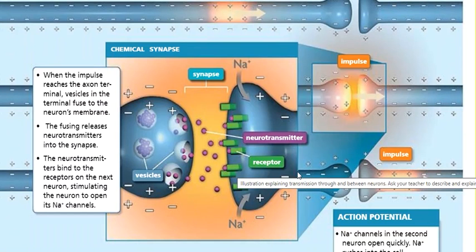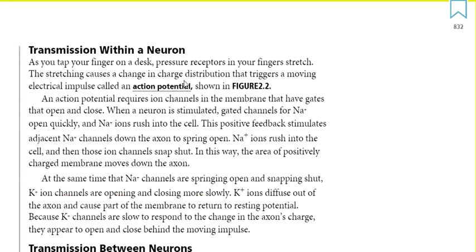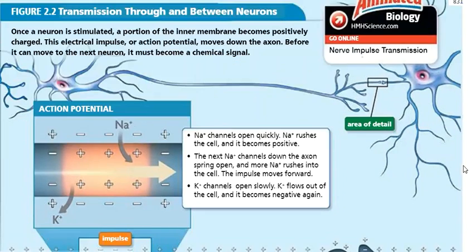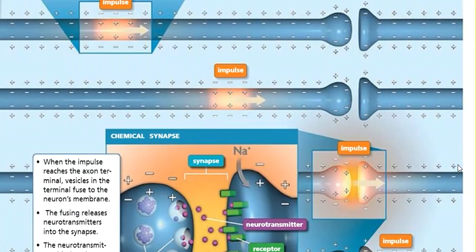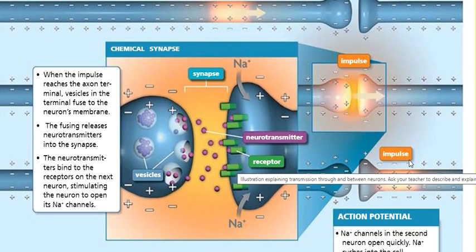When someone touches a very hot surface or does anything that causes an impulse, the neuron transforms from a resting potential to an action potential. Action potential means a change in charge distribution that triggers a moving electrical impulse. The action potential causes the impulse to move through the axon to the next neuron cell.